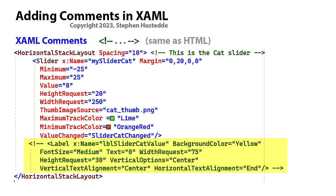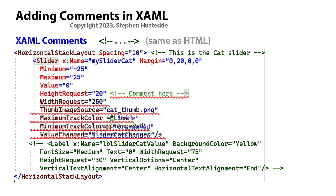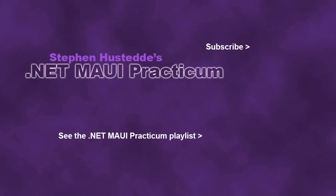In the same way, we can use this to comment out a block of code, as shown here with the label control. We might want to leave that in for reference rather than erase it. However, what you cannot do is put a comment in the middle of a tag — you'll get an error if you try to add a comment after the height request property inside a tag.